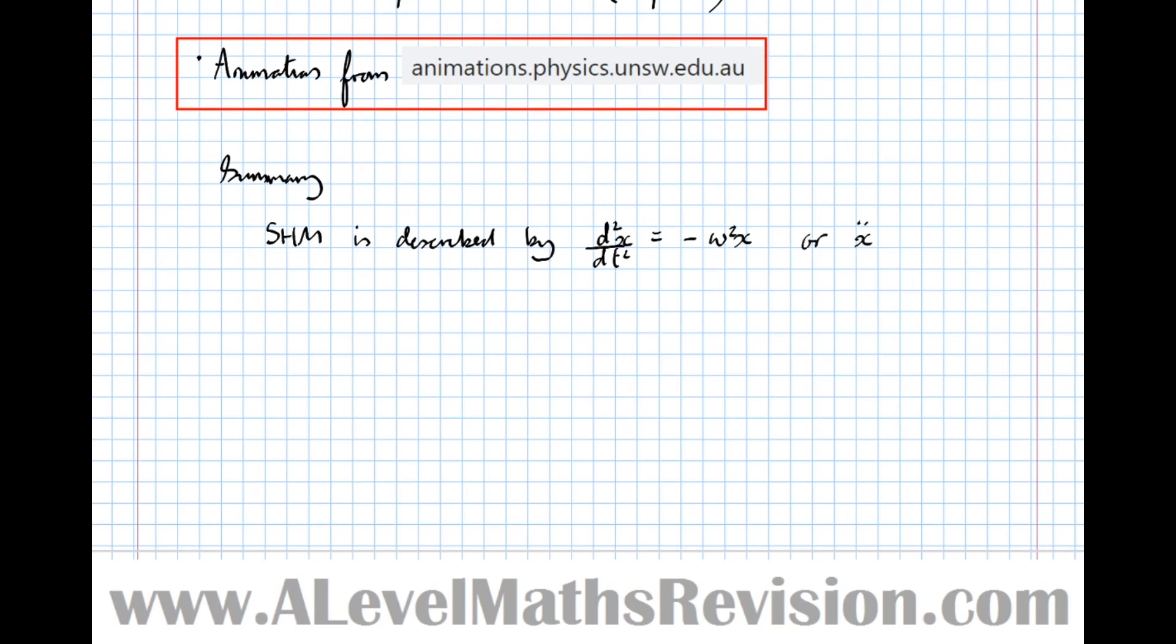is described by d²x/dt² equals minus omega squared x. Or, exactly the same equation but different notation, ẍ equals minus omega squared x.